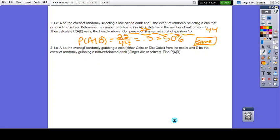So number three, then let A be the event of randomly grabbing a cola. So either a Coke or a diet Coke. So if we're talking about event A, we had 10 Cokes and we had 12 diet Cokes. So event A has 22 in it. And let B be the event of randomly grabbing a non-caffeinated drink. So remember the caffeinated drinks have the stars. So the non-caffeinated would be a ginger ale, a lemon seltzer, or a lime seltzer. That also happens to have 22.